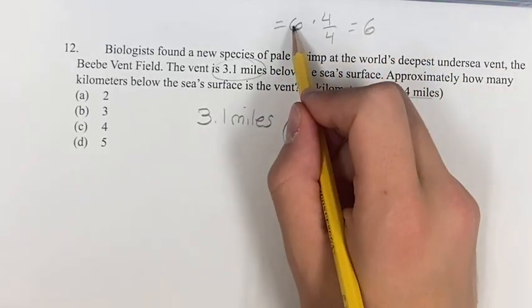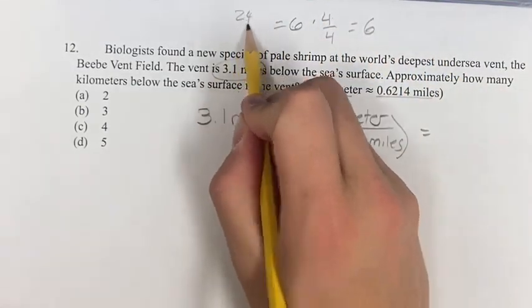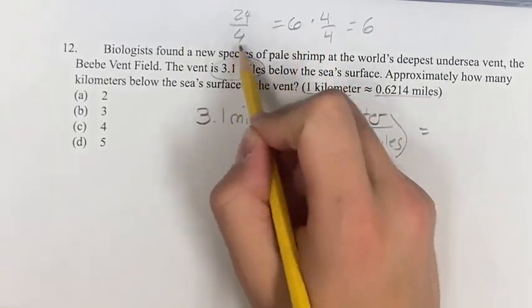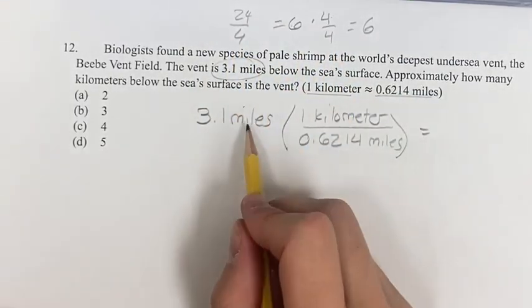However, if we don't simplify, we just do 6 times 4, that's 24 divided by 4. So we can get a new denominator. Here we're getting a new unit.